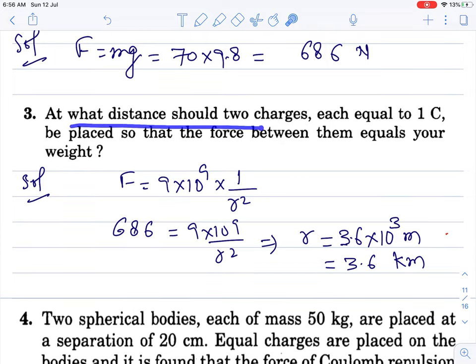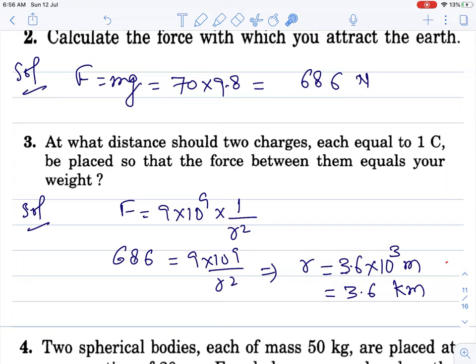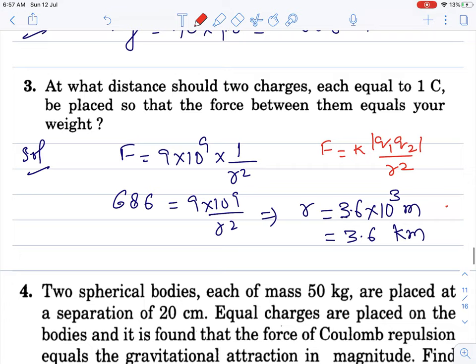Question number 3. At what distance should two charges each equal to one coulomb be placed so that force between them equals your weight. The weight value I put. Force between two charges, F equals k q1 q2 by r square. K is 9 into 10 to the 9. Q1 q2 one coulomb given. Value put karke we get this many kilometers. One coulomb charge is very big charge. Keeping this much distance apart, then also they are able to apply force equal to my weight.